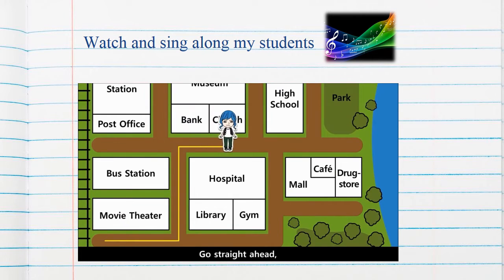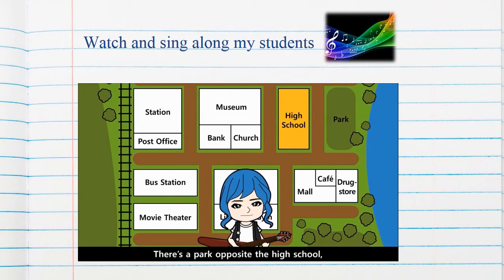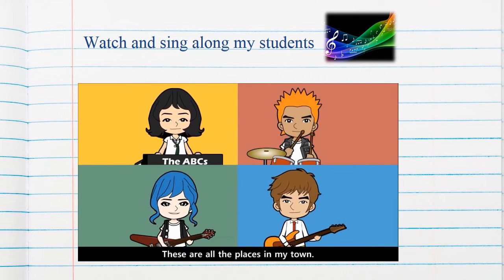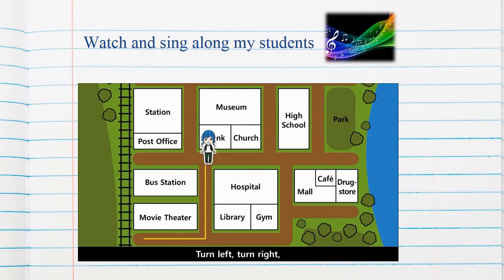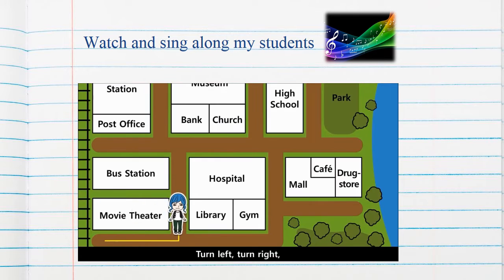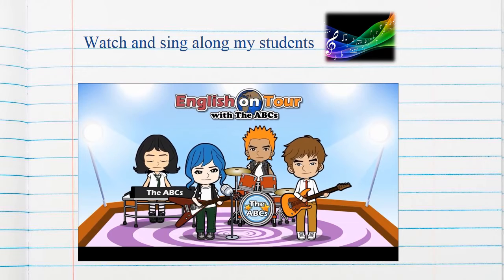Turn left, turn right, go straight ahead. Up the street, then back down, past places in my town. There's a park opposite the high school. And between the mall and drug store, there's a cafe. There's a bus station near to the movie theater. These are all the places in my town.